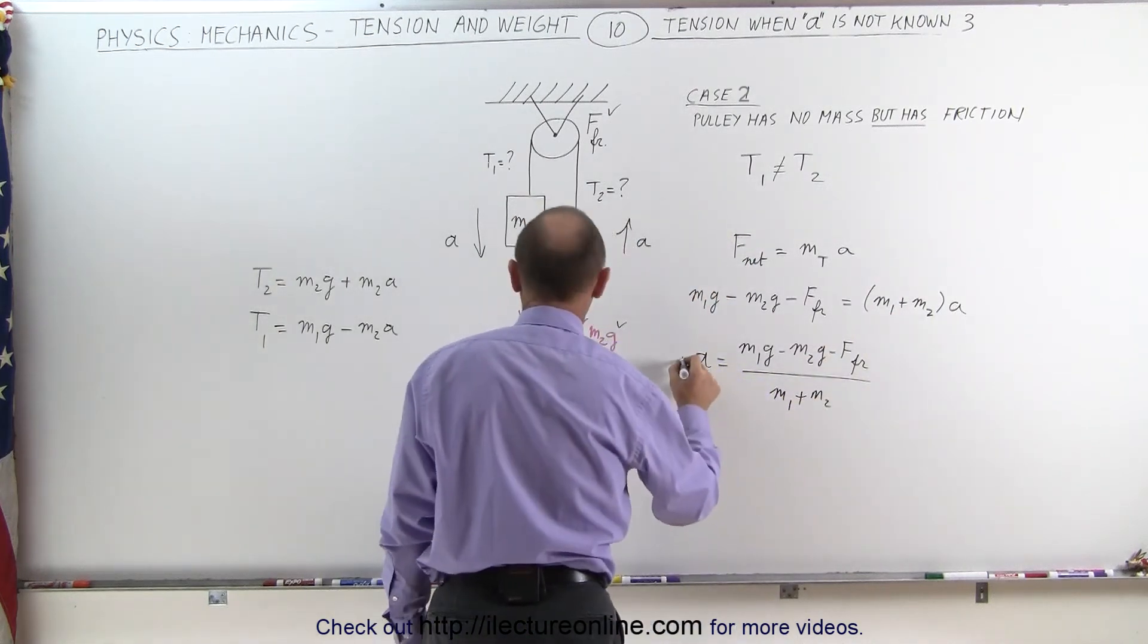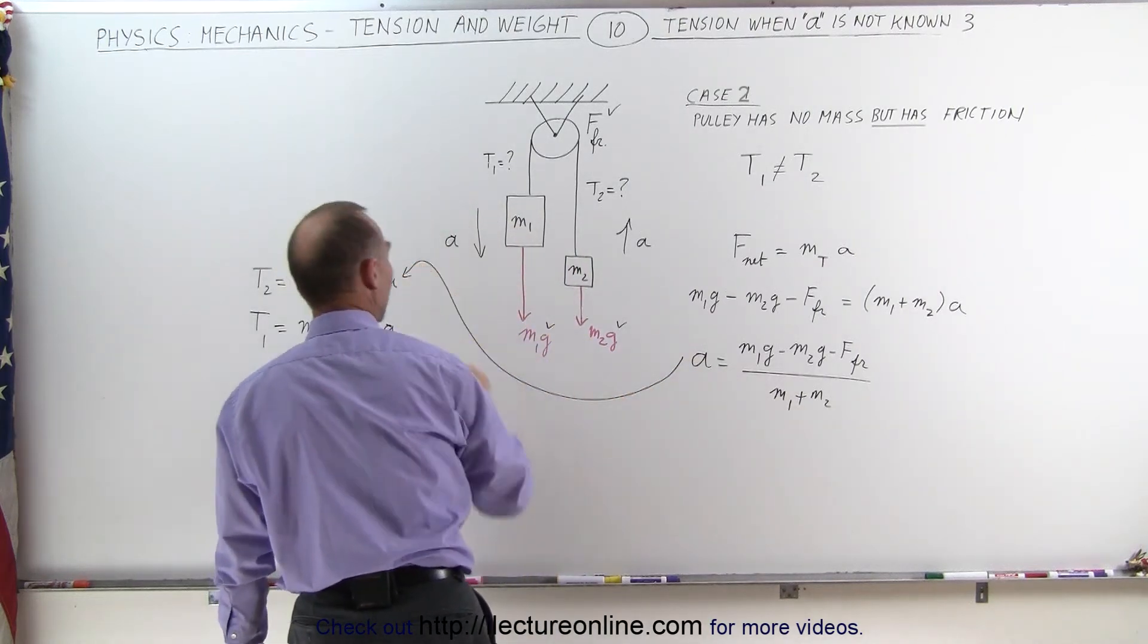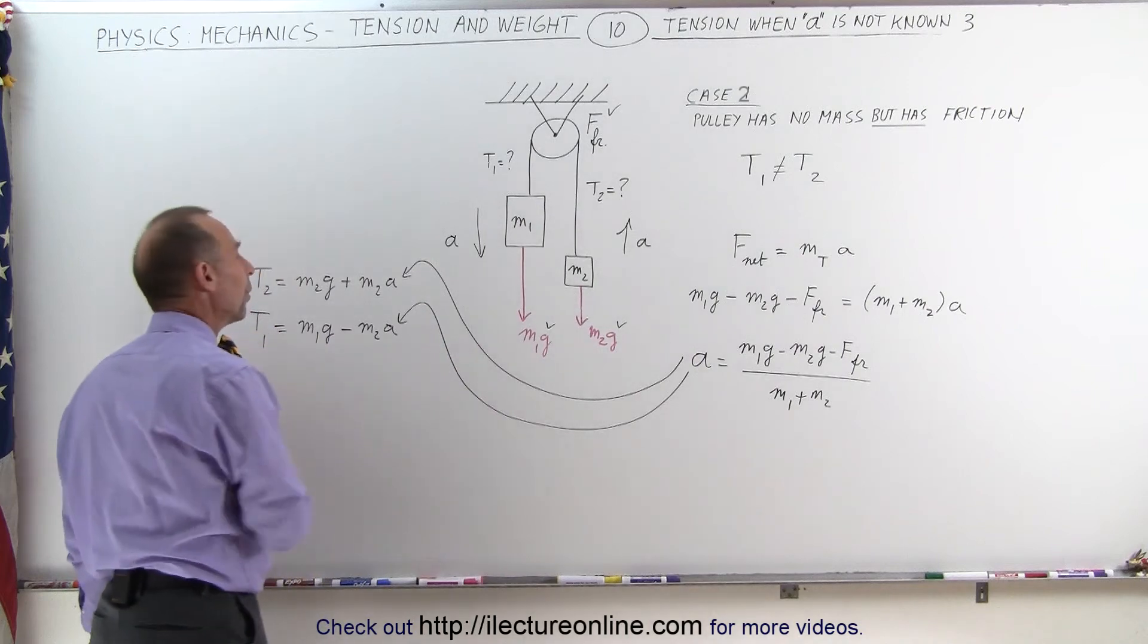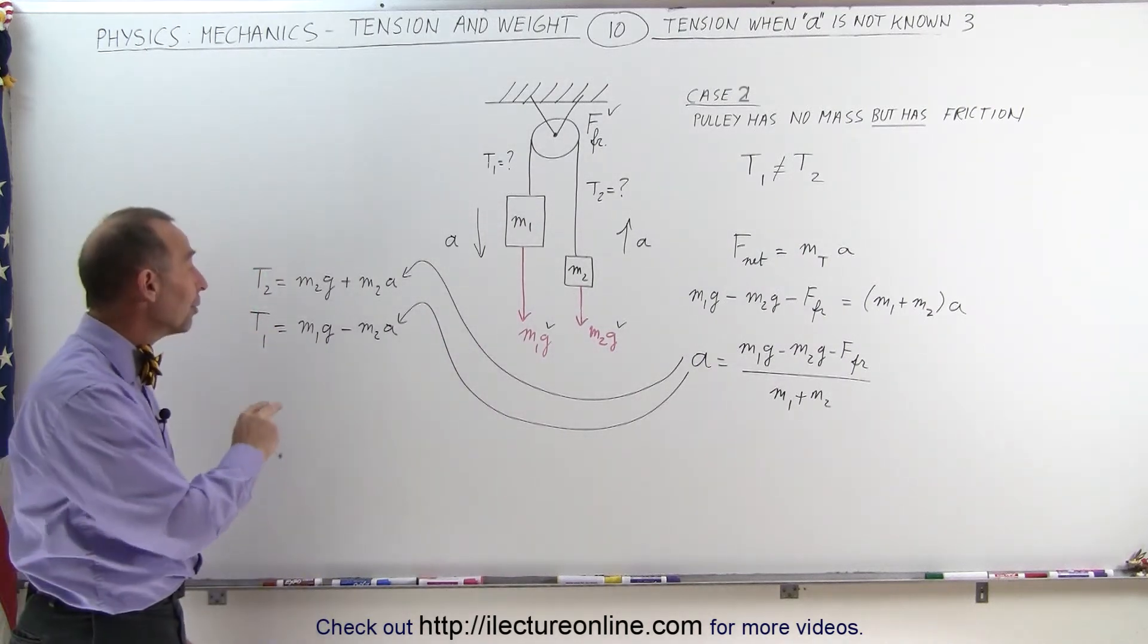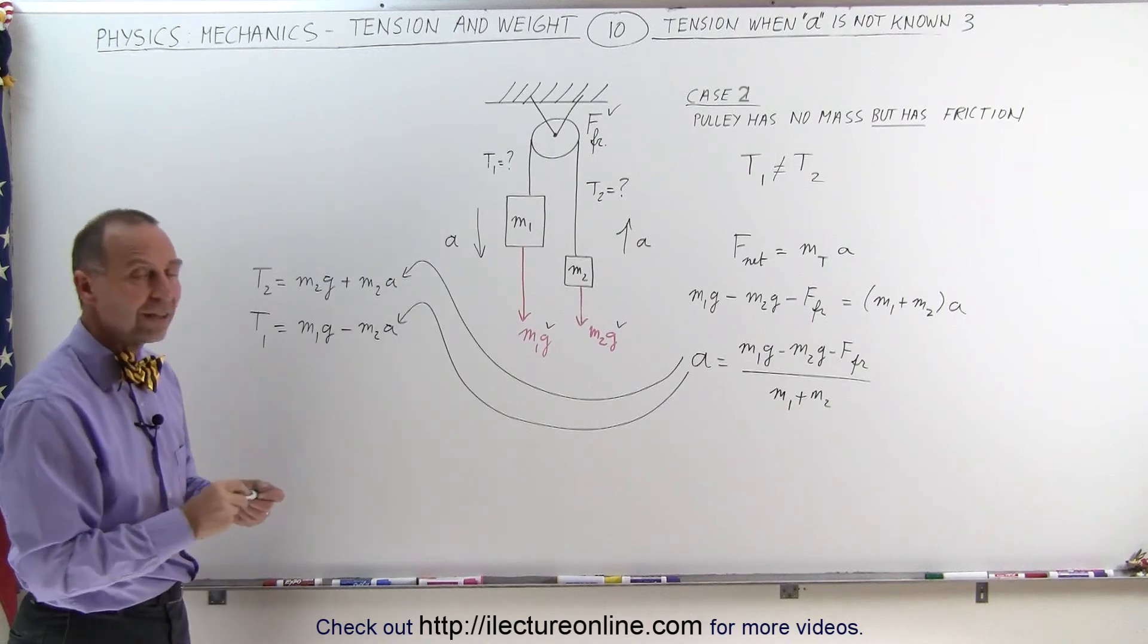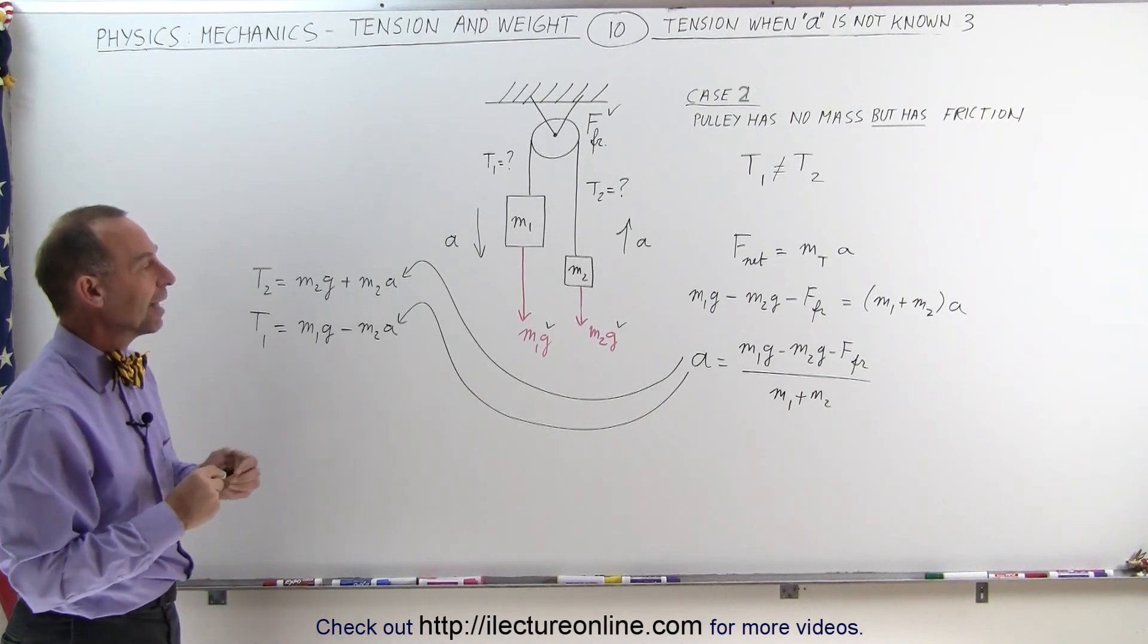And then you can take this acceleration and plug it into this equation, and plug it into that equation to find T1 and T2. If you do that, you'll find out that T1 and T2 will not be equal to one another because of that additional friction force that's involved there.